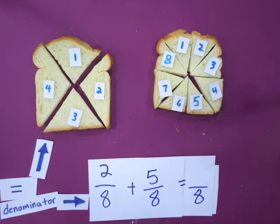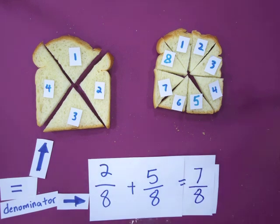The denominator does not change, whereas you add the numerators. So two plus five equals seven, and there you have it, seven eighths.